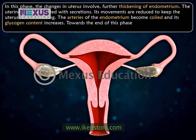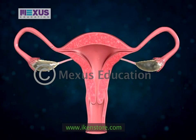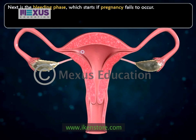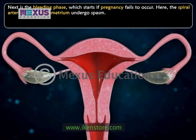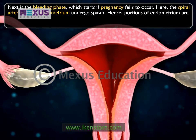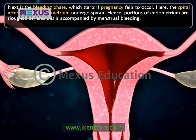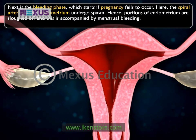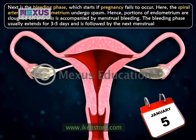Towards the end of this phase, the endometrium is thick, soft, and rich with blood. Next is the bleeding phase, which starts if pregnancy fails to occur. Here the spiral arteries of the endometrium undergo spasm. Hence, portions of endometrium are sloughed off and this is accompanied by menstrual bleeding. At the end of menstruation, the endometrium that remains is only 0.5 to 1 mm thick. The bleeding phase usually extends for 3 to 5 days and is followed by the next menstrual cycle.